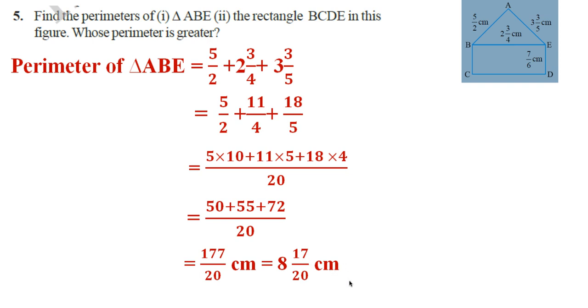You can change it to a mixed fraction. This is the perimeter of triangle ABE. Now let us find out the perimeter of rectangle BCDE.